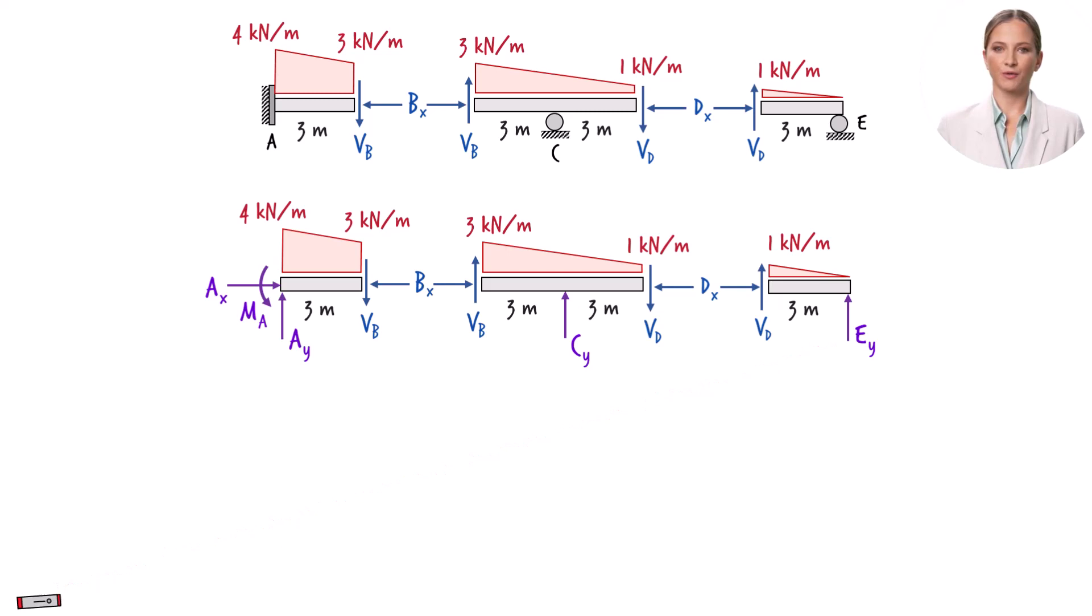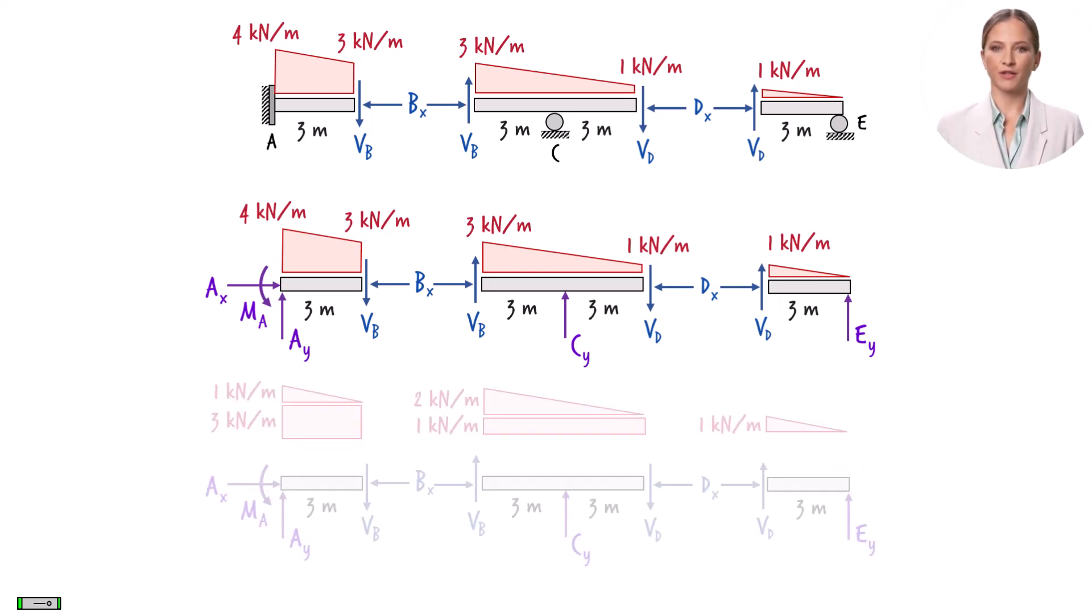Moreover, for simplicity, we can represent the distributed load in each beam segment by its equivalent concentrated load. Each trapezoidal load can be broken down into a combination of rectangular and triangular loads.